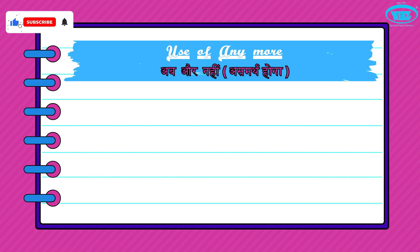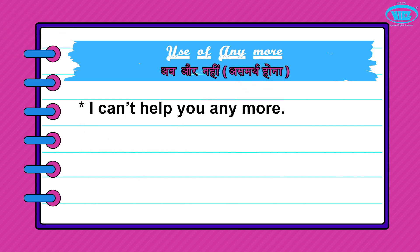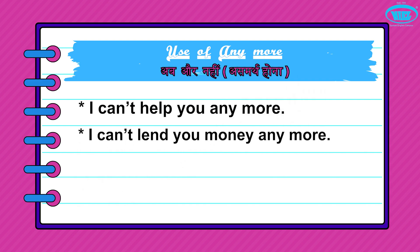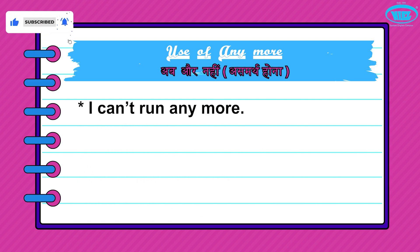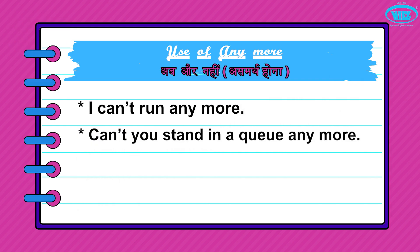The next pattern is 'anymore', which means 'ab sumna' — to stop doing something. For example: I can't help you anymore. I can't lend you money anymore. Do not cook anymore. I can't run anymore. Can't you stand in a queue anymore? I don't want to buy books anymore.